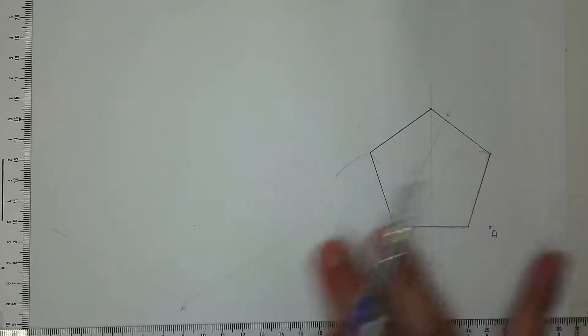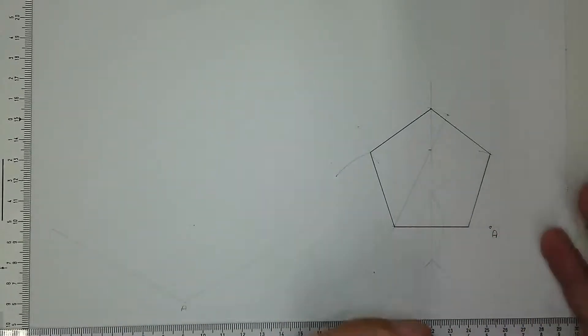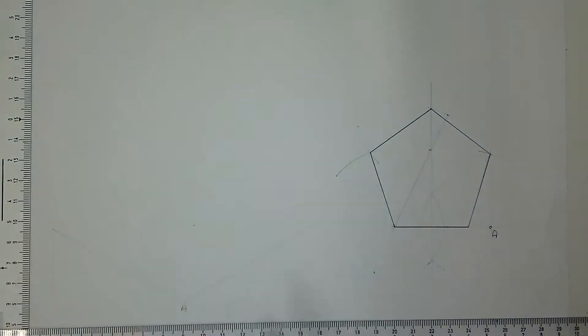I need to construct an auxiliary view. An auxiliary view is a view where I can see the true shape. Right now I've indicated point A, and I've given the point A on my 30-degree axis on the isometric. So if we take this drawing, it's supposed to lie down like this with A on the bottom right-hand side.